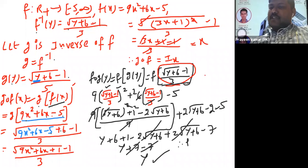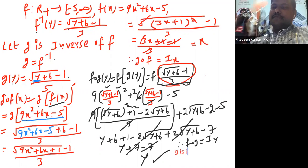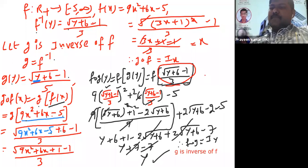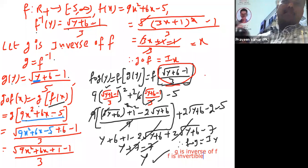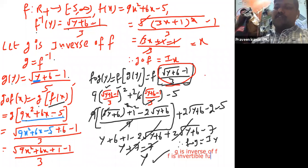Therefore f circle g is y. What is the next step? Since g is inverse of f, and because g circle f equals x and f circle g equals y, we conclude that f is an invertible function.